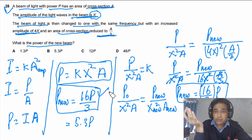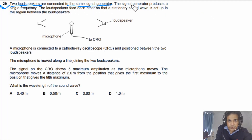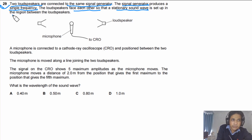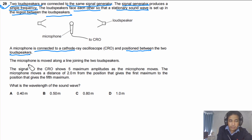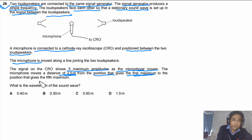If these videos are helping you, please like, subscribe, and share with your friends. Question 29: Two loudspeakers connected to the same signal generator produce a single frequency and face each other, setting up a stationary sound wave between them. A microphone connected to a CRO is moved along the line joining the loudspeakers and shows five maximum amplitudes. The microphone moves 2.0 meters from the first maximum to the fifth maximum.